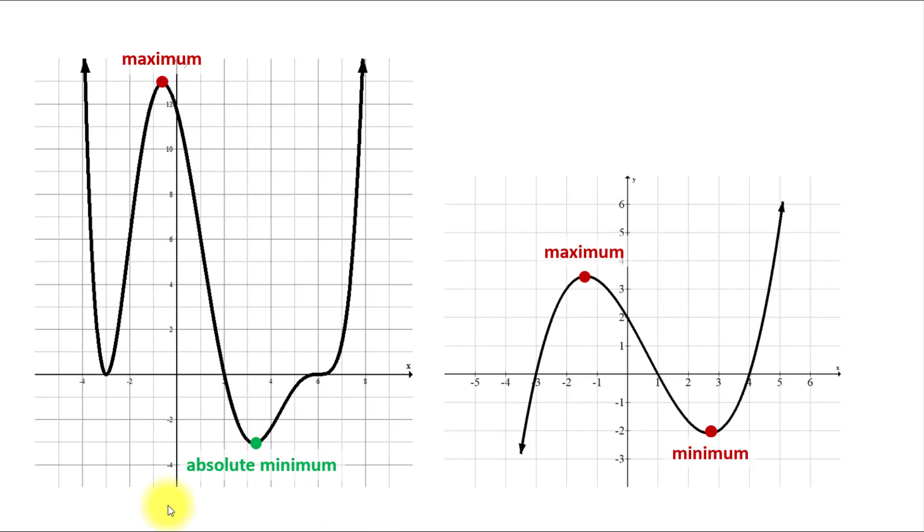For example, this point here is the absolute minimum point because it's the lowest point of the graph and it corresponds to the smallest value of the function. Looks like in this case it's negative 3.